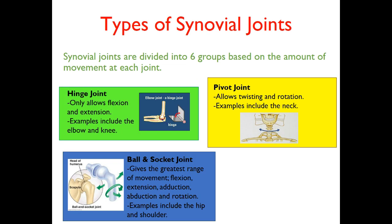The next type of synovial joint is the hinge joint, which only allows flexion and extension. We have these in the knee and the elbow — like a door, it can open and close, or the angle can increase or decrease. The next type is the ball and socket joint, which has the greatest range of movement. It can do flexion, extension, abduction, adduction, and rotation. We find ball and socket joints in the hip and the shoulder.